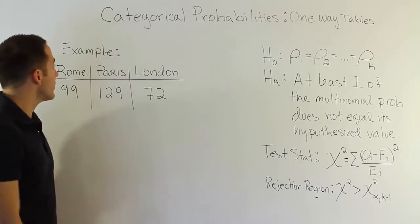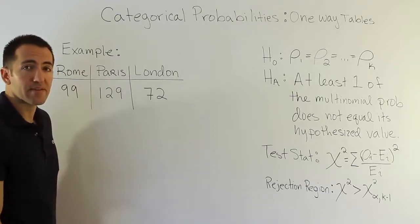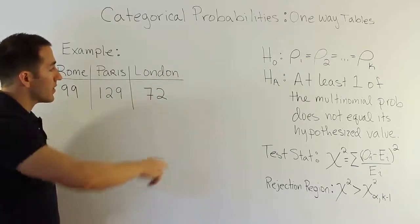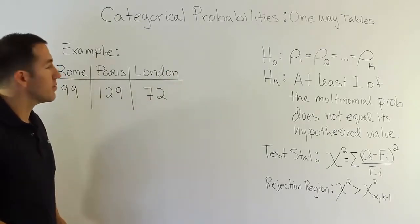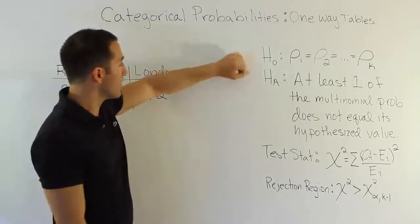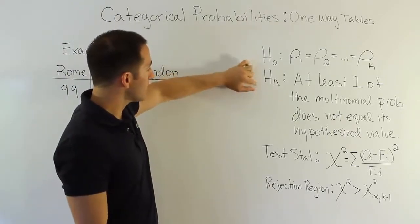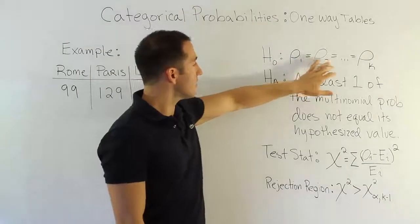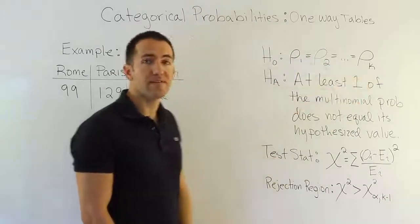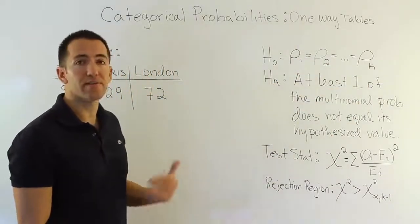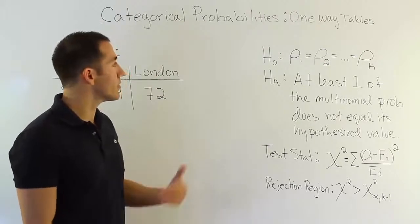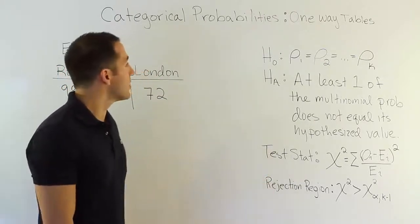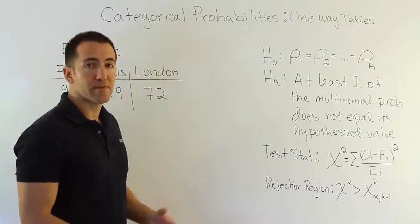With this data, we want to run a hypothesis test. The null hypothesis H0 is essentially that each of the three cities has an equal proportion of the public who would desire to go to it — meaning there is no preference among the three cities.